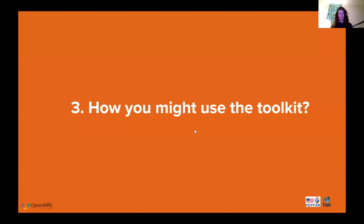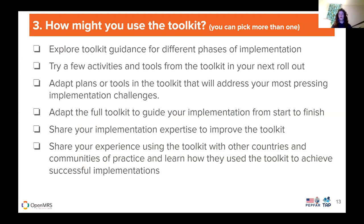So how might you use the toolkit? There are multiple ways, and you can pick more than one. You could look at the guidance for different phases of implementation, glance through the list of activities and identify what your team or country should focus on. You can take and adapt the plans or tools to address your most pressing challenges, or take the full toolkit and adapt the whole thing to guide your implementation from start to finish. You might also share your implementation expertise back with the OpenMRS community to improve the toolkit.